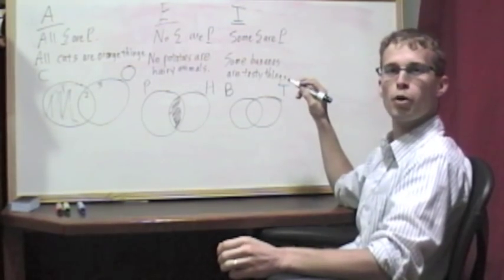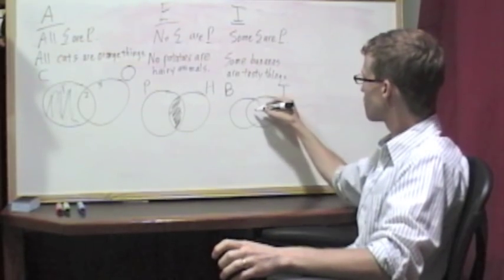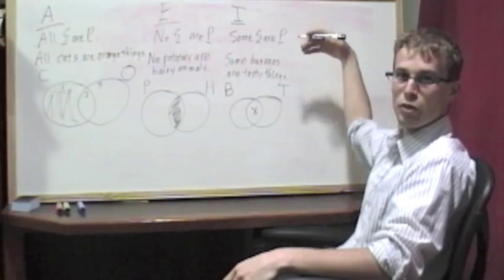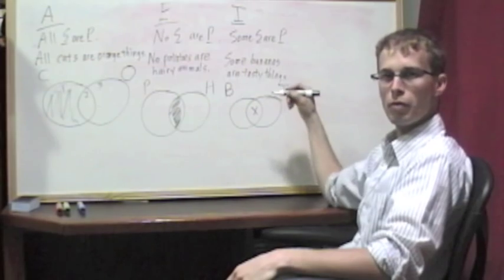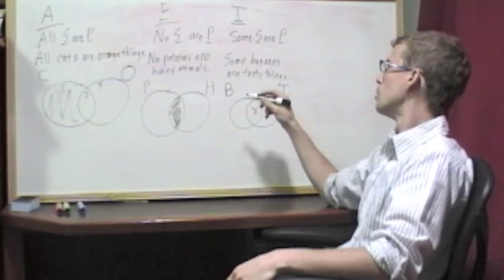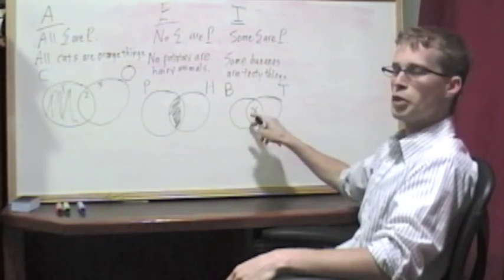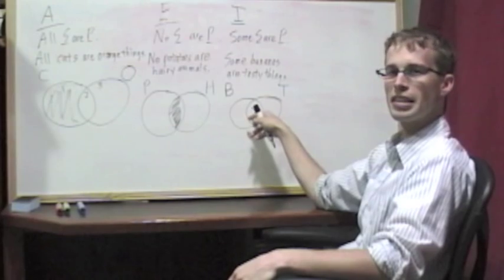So instead of shading it out for partial claims, what we're going to do is we're going to use an X. For an I claim, which is a positive partial claim, some S are P, we put an X right in the middle because we're saying there is this intersection between the subject term and the predicate term.